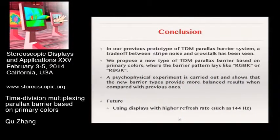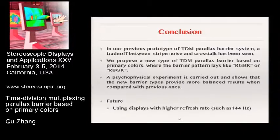In conclusion, we have proposed a parallax barrier based on primary colors that achieves a more balanced trade-off between crosstalk and stripe noise. For the future, we are considering using displays with higher refresh rates, since LCDs with a refresh rate of 144 Hz have already appeared on the market. Thank you for your attention.